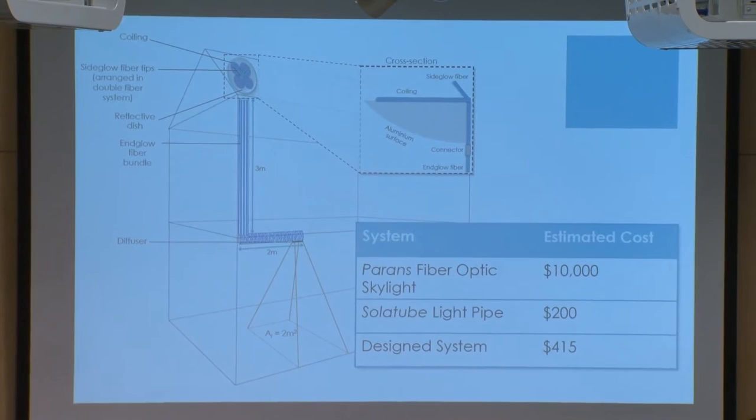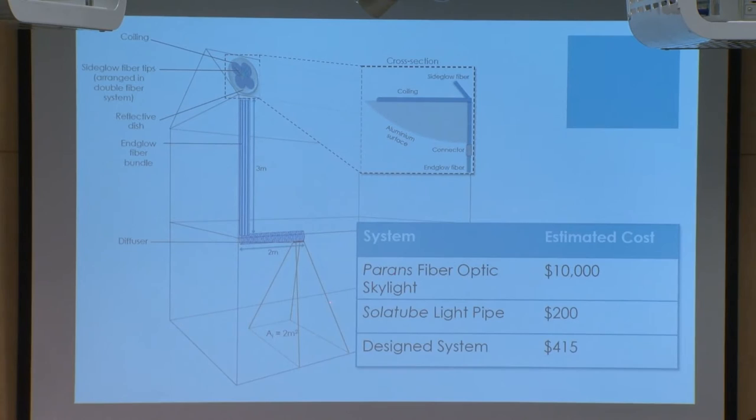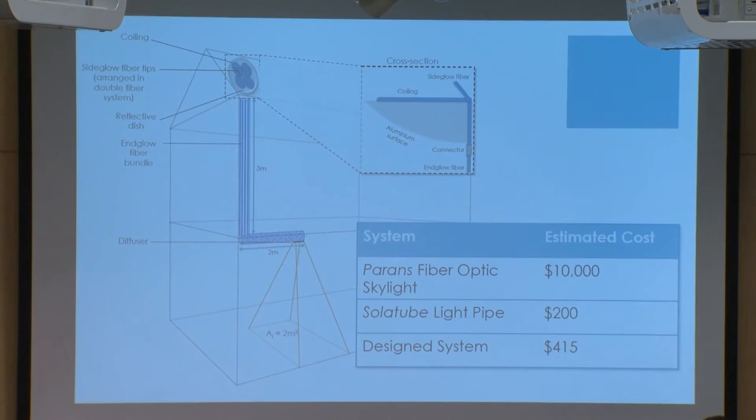With any engineering project, you think about cost. The design system falls in between the fiber optic skylight and the light pipe in cost, but it is significantly less expensive than the fiber optic skylight. The solar tube light pipe shows $200 here, but because light pipes are very bulky, installation costs bump that up to about $500. So the design system is quite optimal in terms of cost.